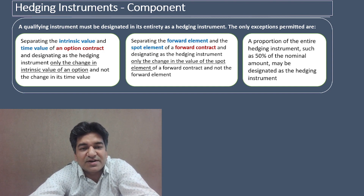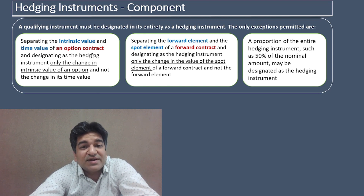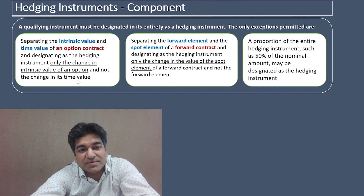Exception number one: in the case of an option contract, there is an intrinsic value and a time value. Ind AS 109 says that an entity can designate as a hedging instrument only the change in the intrinsic value of an option — and not the time value portion.